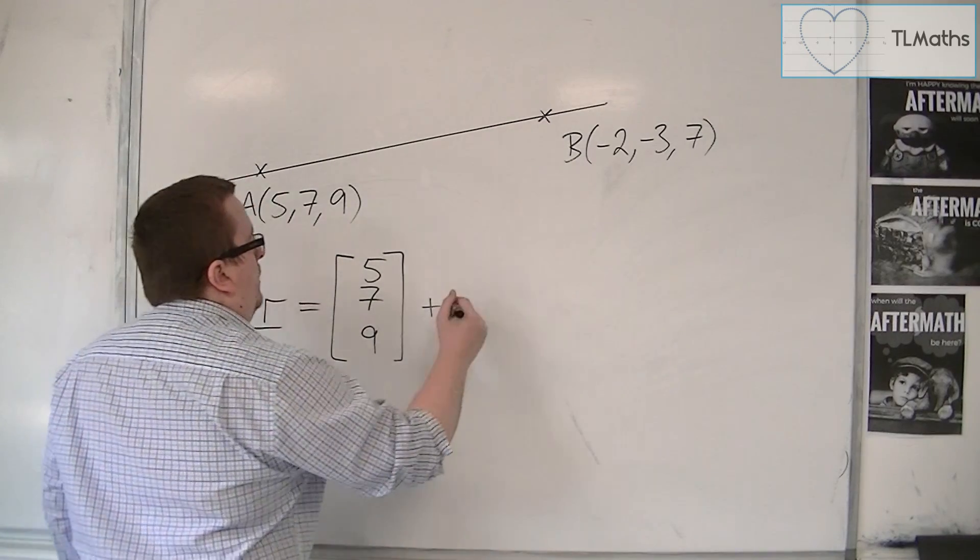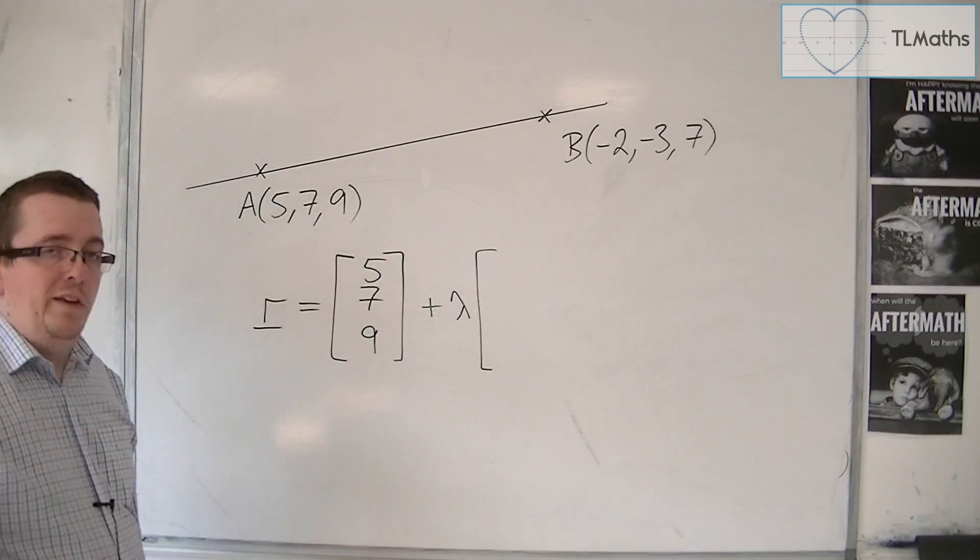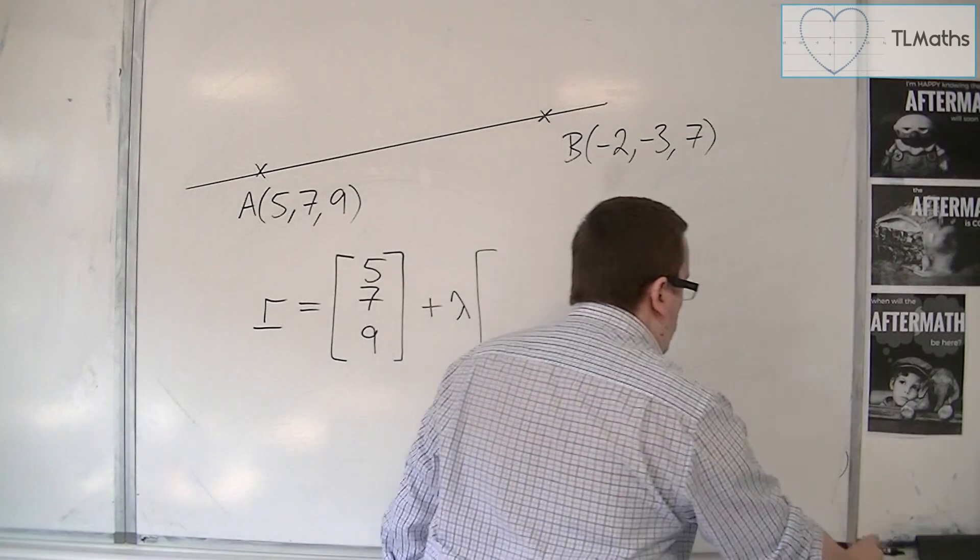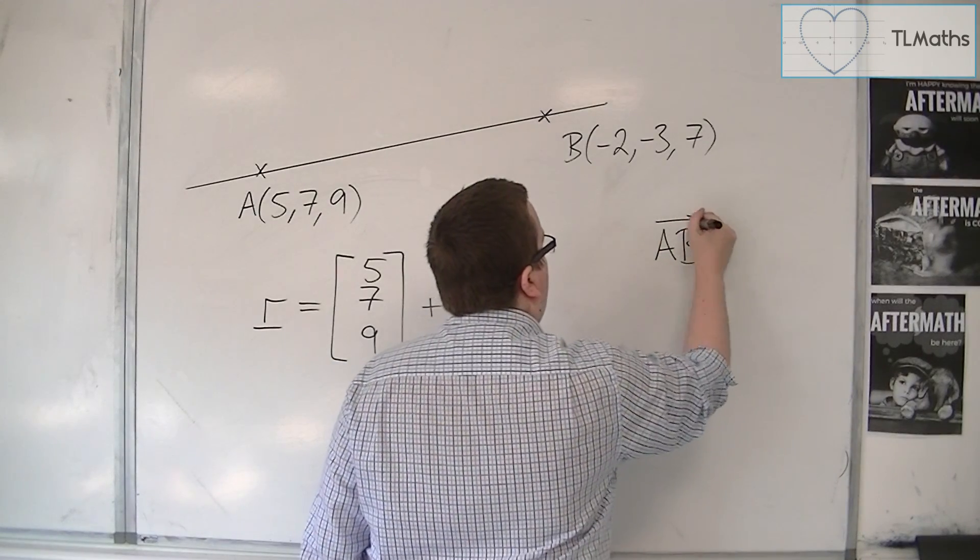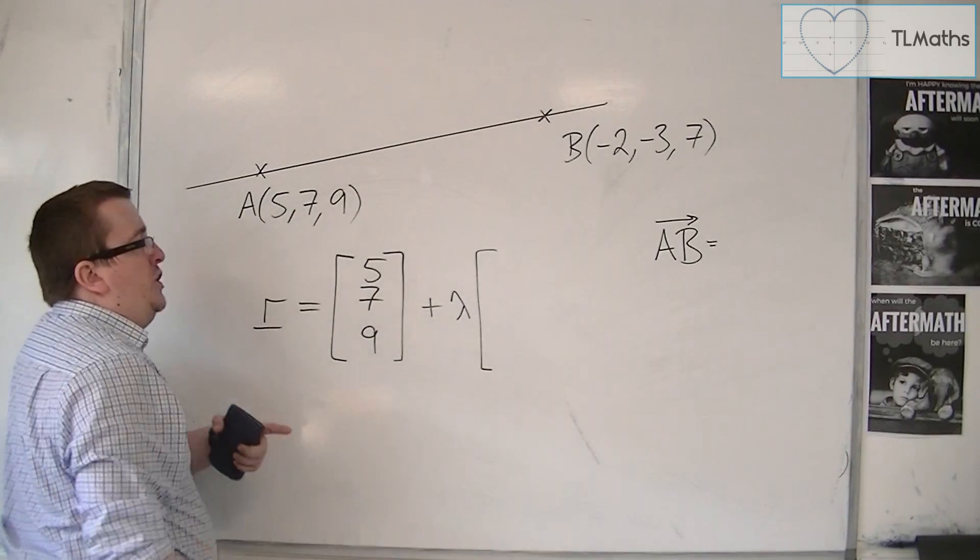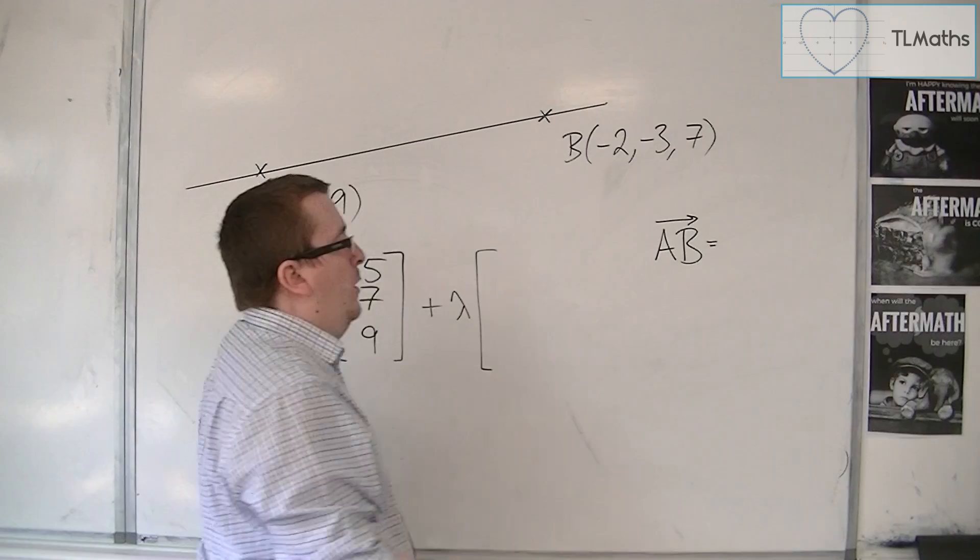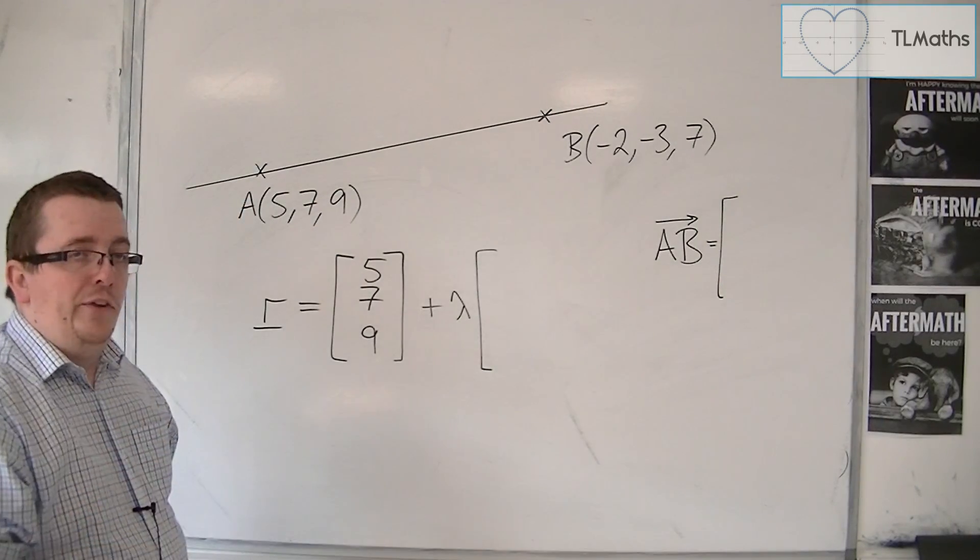Plus some multiple of the direction vector of the line. We can find the direction vector by finding how to get from A to B. That will tell me which direction to go. To do that, I need OB minus OA.